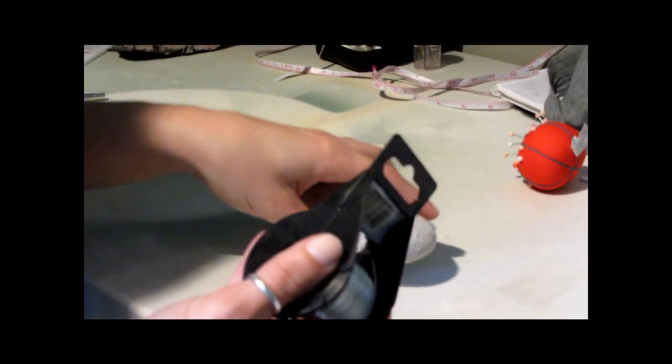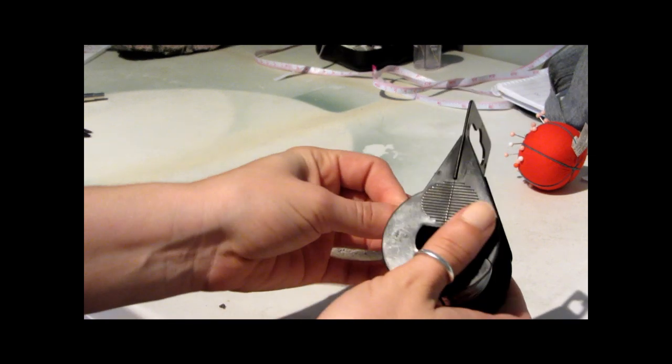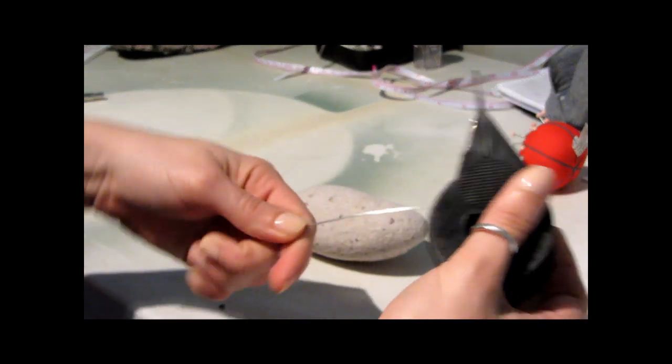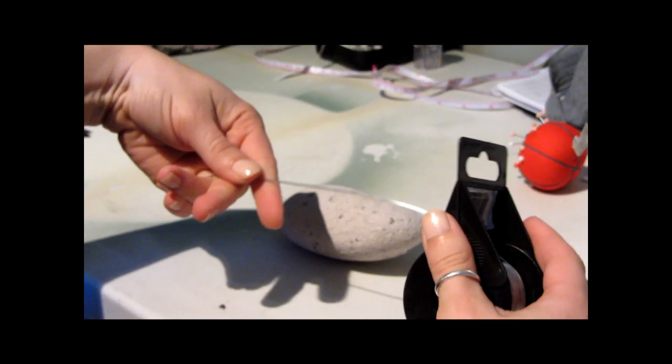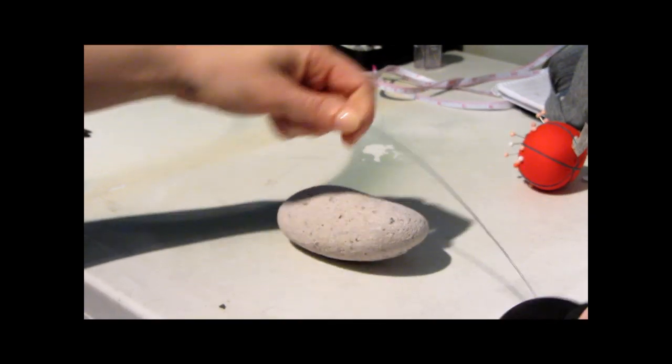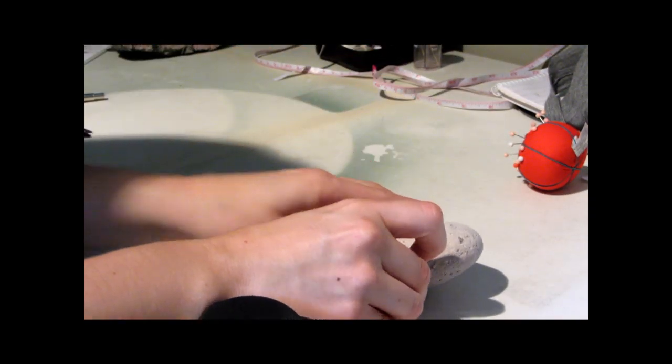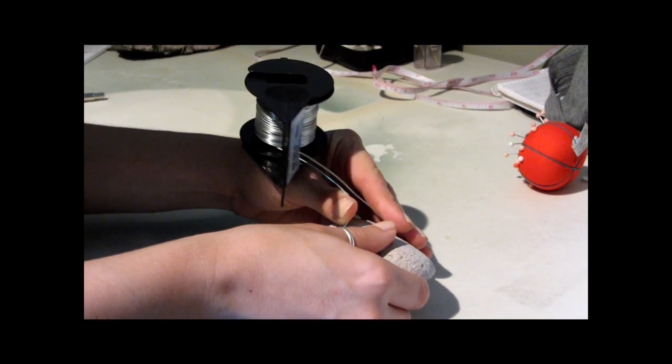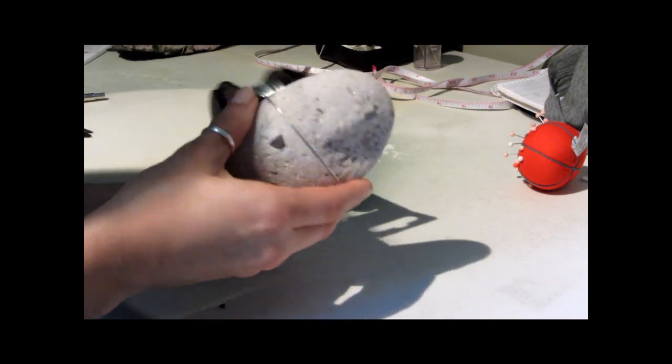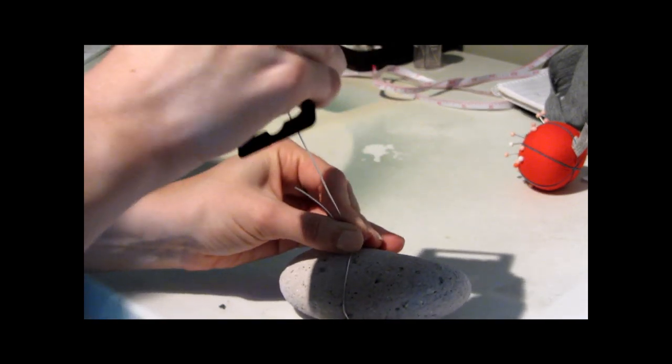So what we do first is take a length of wire, put it underneath the rock, and then pull up and have the meat, and just make sure it's in the center of the rock.